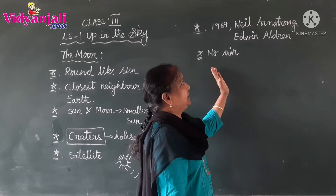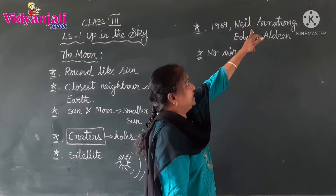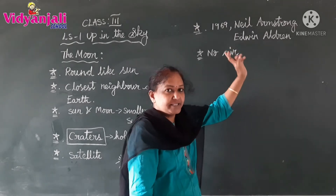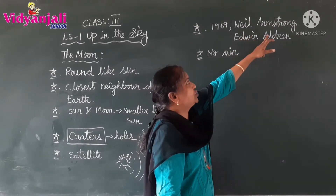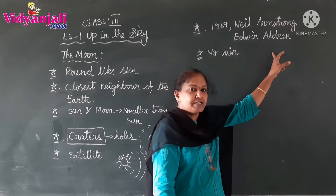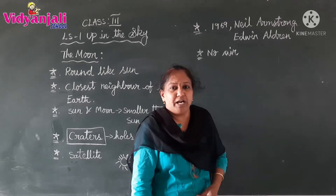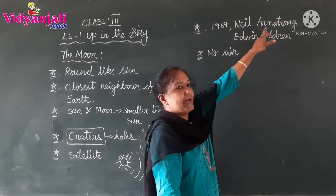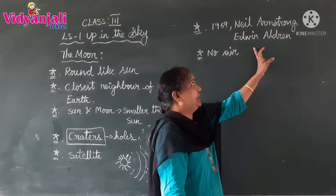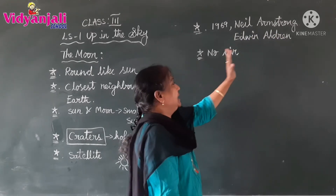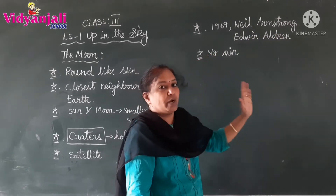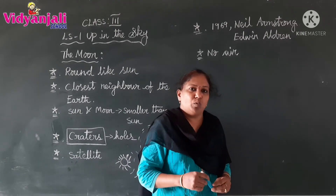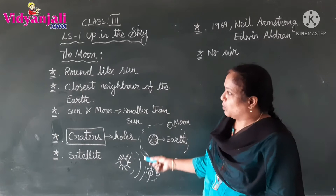In 1969, Neil Armstrong and Edwin Aldrin first landed on the moon. Who are those two persons? Neil Armstrong and Edwin Aldrin. There is no air on the moon. Now we have discussed about the moon.